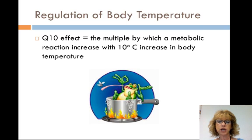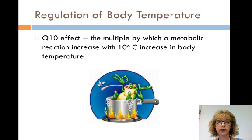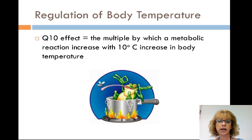For example, terrestrial animals exchange gas by breathing and lose water by evaporation from moist lung surfaces. For every 10 degrees Celsius temperature increase, most enzyme-mediated reactions speed up 2 to 3 times until the temperature is high enough to denature the proteins. The Q10 effect is the multiple by which a metabolic reaction increases with 10 degrees Celsius in body temperature. For example, glycogen hydrolysis in frogs increases 2.5 times from 20 degrees Celsius to 30 degrees Celsius — meaning the Q10 is 2.5.